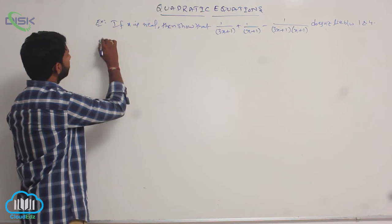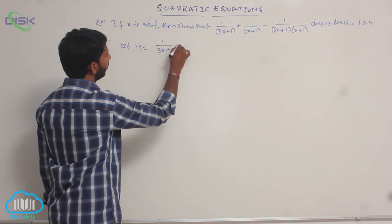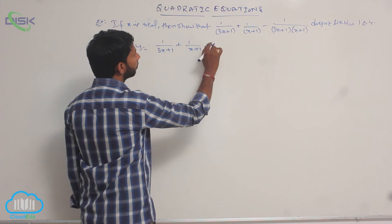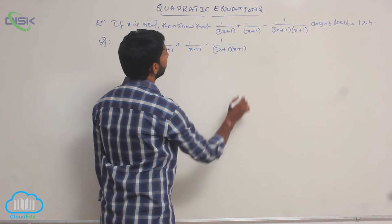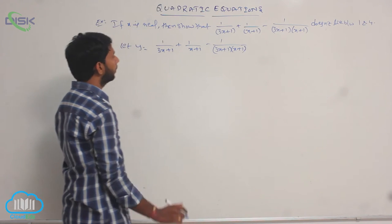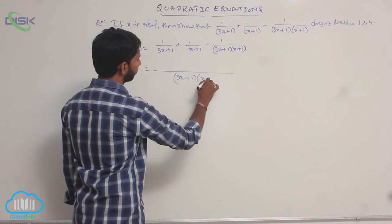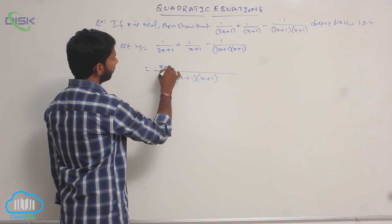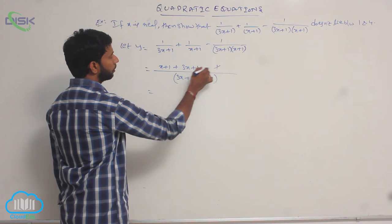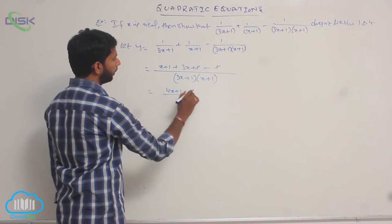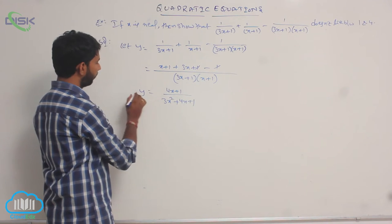Let us consider that y is equal to 1/(3x+1) + 1/(x+1) - 1/((3x+1)(x+1)). Taking LCM, the LCM is (3x+1)(x+1). In the numerator that is (x+1) + (3x+1) - 1, and -1 + 1 gets cancelled. That gives 4x+1 in the numerator and 3x²+4x+1 in the denominator, equal to y.